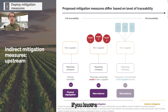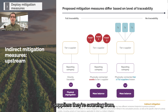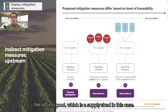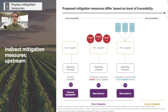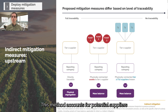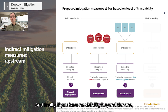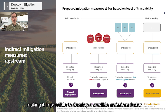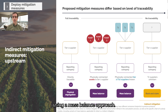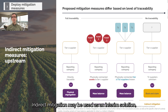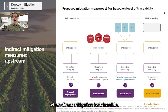If you know the tier 1 supplier but aren't certain which sub-suppliers they're sourcing from — though you know which suppliers they could potentially buy from, i.e. the activity pool or supply shed — a mass balance is again the applicable chain of custody model. This method accounts for potential suppliers within the pool, reflecting a lower level of physical traceability within the value chain. Finally, if you have no visibility beyond tier 1, making it impossible to develop a credible emissions factor using a mass balance approach, indirect mitigation may be used as an interim solution, allowing companies to meet targets when direct mitigation isn't feasible.